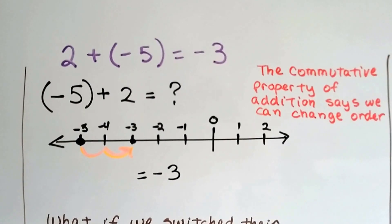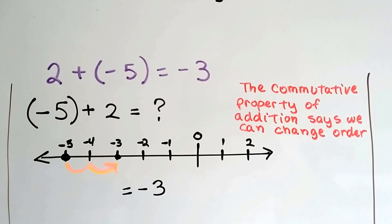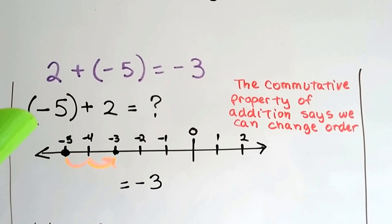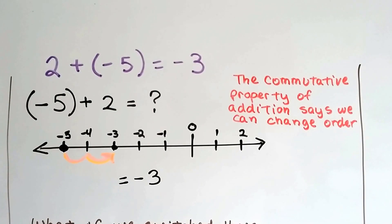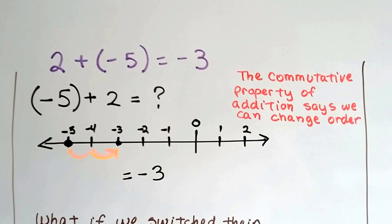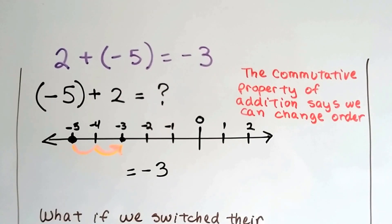If we have 2 plus negative 5 and we get negative 3, what happens if we add negative 5 plus 2 and make them switch places? We're going to get the same answer, negative 3, because the commutative property of addition says that we can change their order.